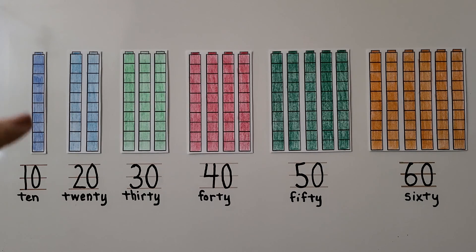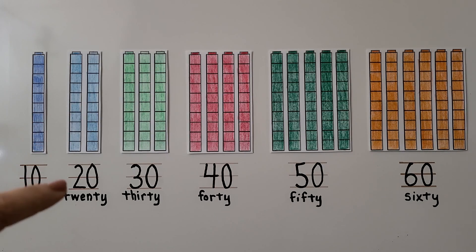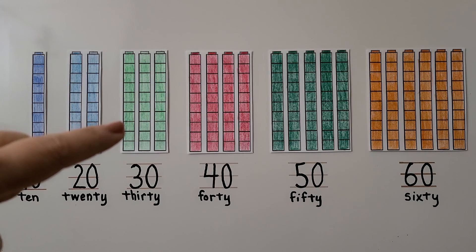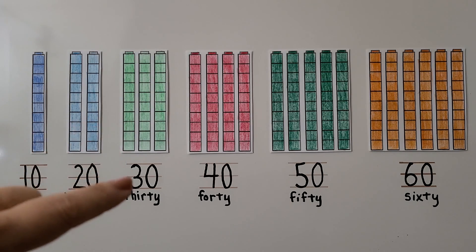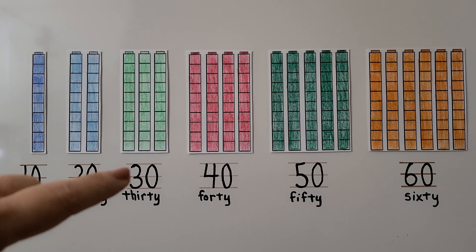Do you notice that we have 1 cube tower and there's a 1 here in the 10? We have 2 cube towers and there's a 2 in the 20. We have 3 cube towers of 10 and there's a 3 in 30.